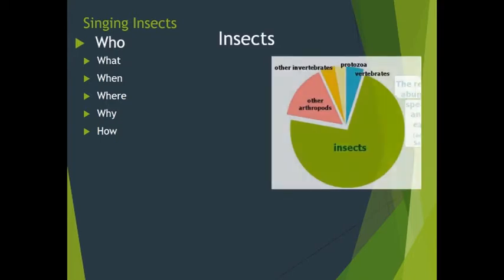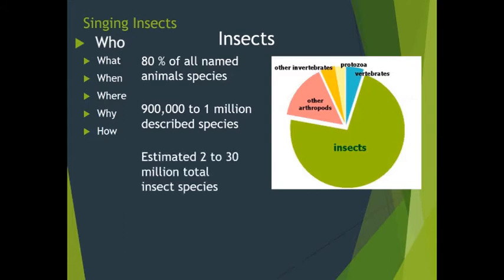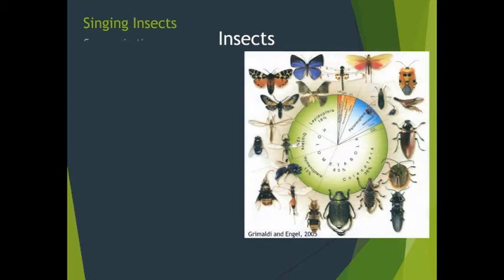Insects dominate the world. The number of insect species far overshadows all other animal groups combined. Research in recent decades, especially in tropical forests, has added thousands of new species every year. It's thought that less than half of all insects have been scientifically described. In terms of abundance, for every one of the nearly eight billion people on Earth, there are a billion billion individual insects.